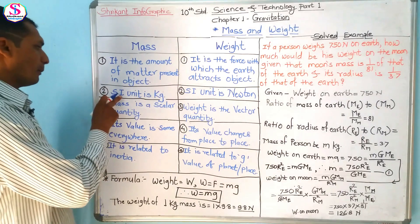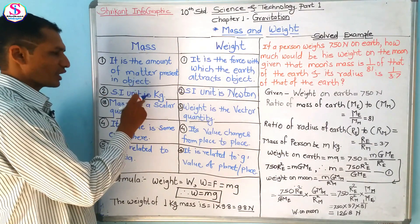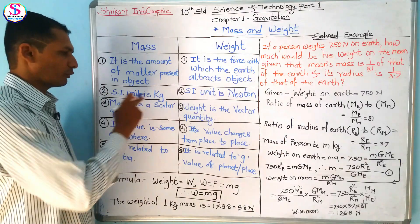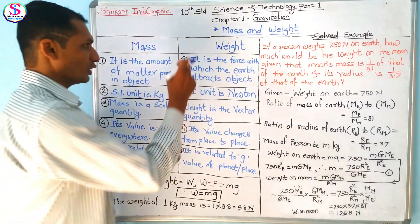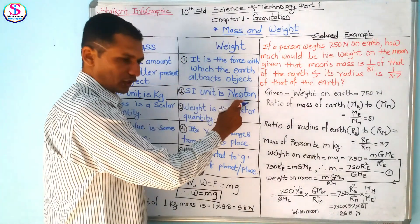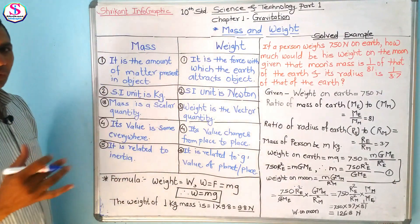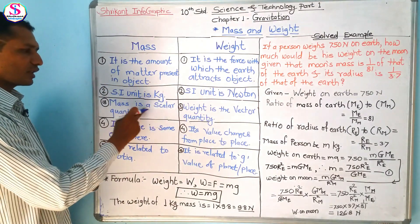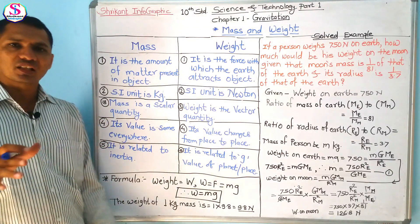The unit of mass in SI is kilogram, written in short as kg. And the unit of weight is Newton.